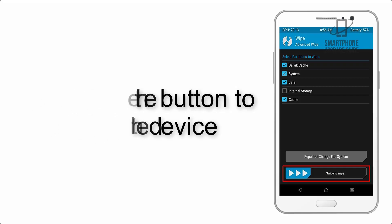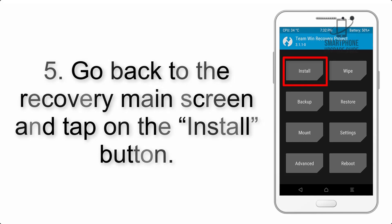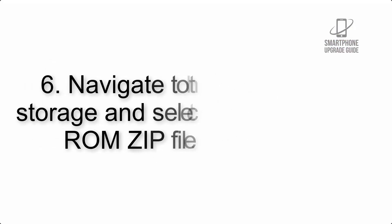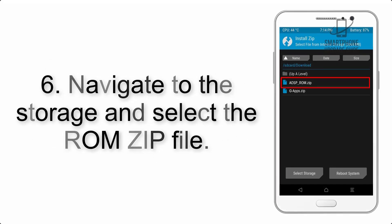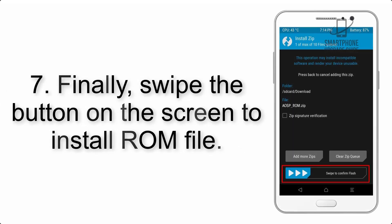Step 4: Swipe the button to wipe the device. Step 5: Go back to the recovery main screen and tap on the Install button. Step 6: Navigate to the storage and select the ROM zip file.